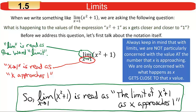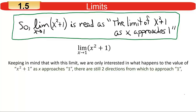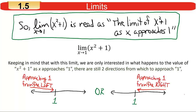Keep in mind, we're not particularly concerned about the value at the number — in this case at 1. We only want to know, with the concept of limit, what happens as x gets close to that value. Keeping that in mind, there are still two directions from which you could approach 1: from smaller values, approaching from the left, or from larger values going to the right toward 1.